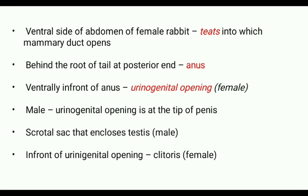In female rabbit, on the ventral side of their abdomen, there are four or five pairs of well-developed teats, and mammary ducts or milk ducts open out at the tip of these teats. These teats are very small and underdeveloped in male rabbit.